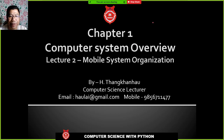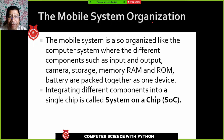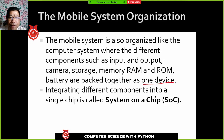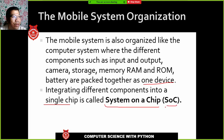In this second lecture of Chapter 1, we are going to study mobile system organization. We are going to change our focus to mobile systems from computer systems. The mobile system is like a computer system where different components such as input, output, camera, storage, memory, RAM, ROM, battery etc. are packed as one device. Integrating different components into a single chip is known as System on a Chip, or SOC.